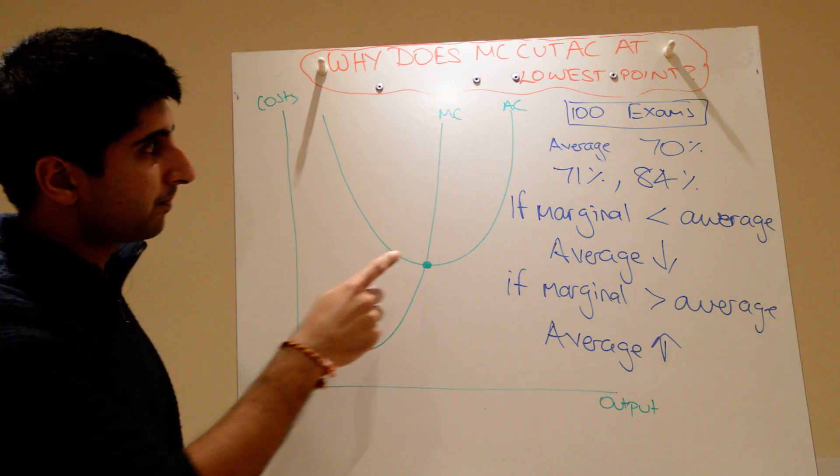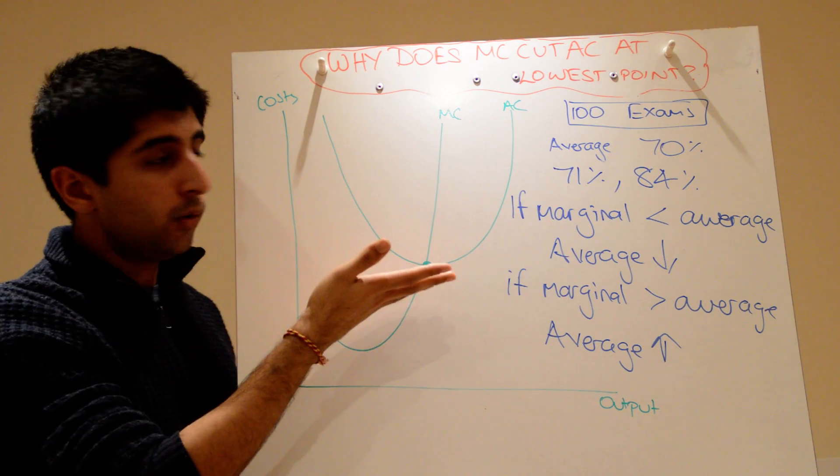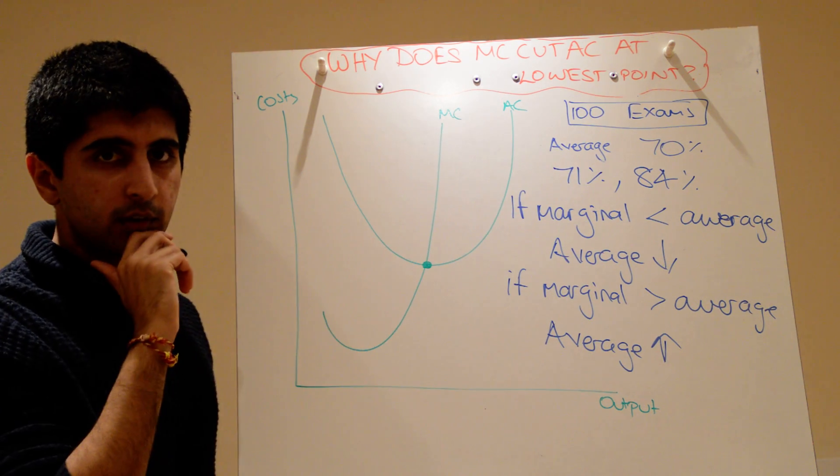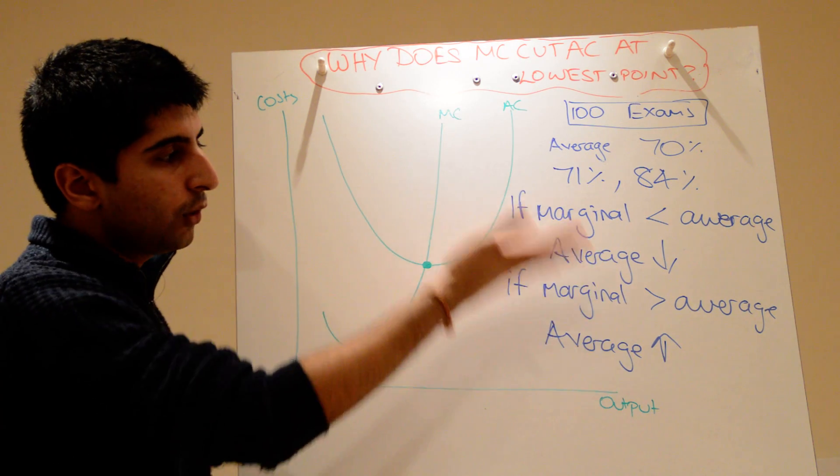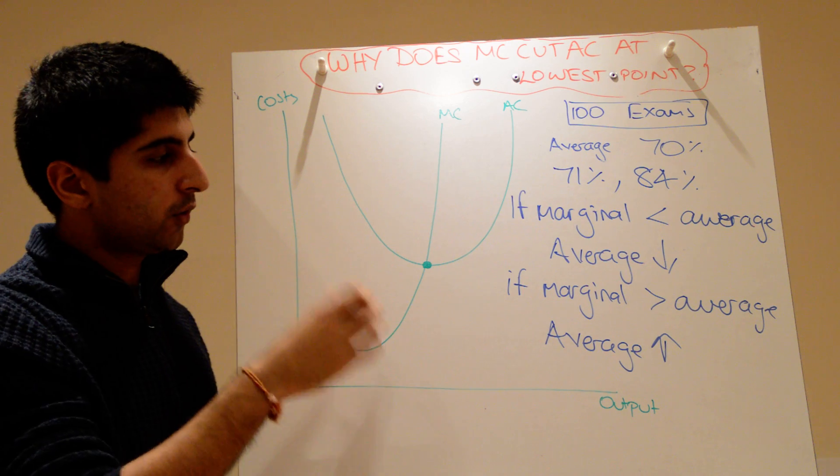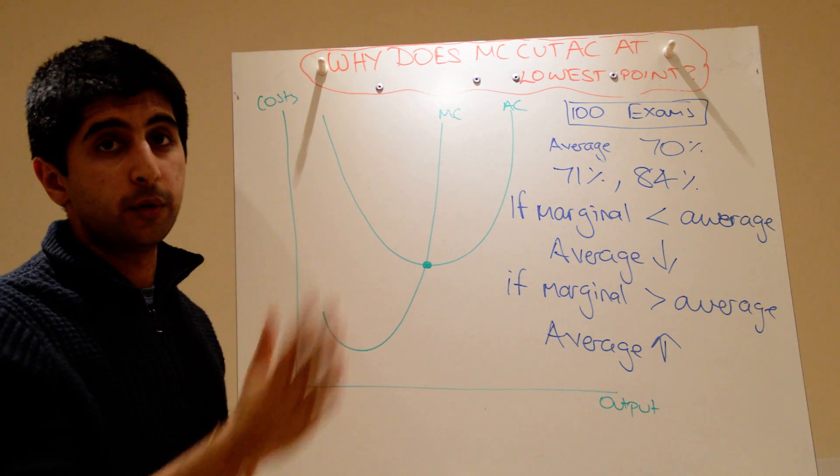At that point, the marginal is neither below nor above the average cost curve. Therefore, the average cost gradient is zero. So using these two laws, the only place the marginal cost curve can cut the average cost curve is at its lowest point.